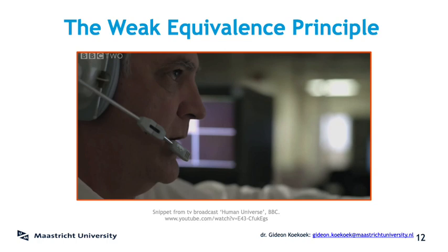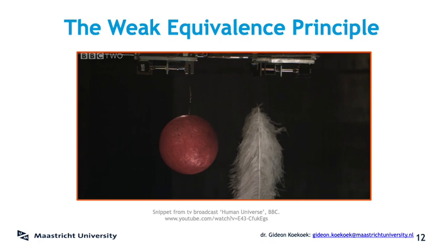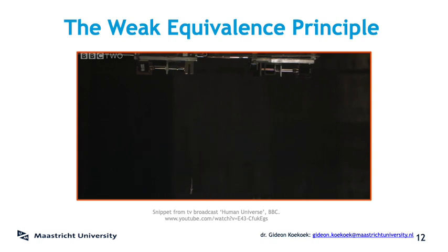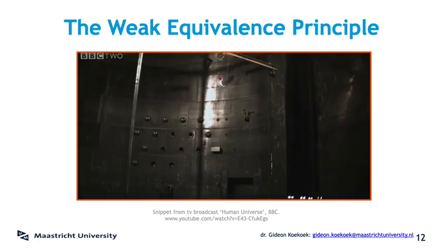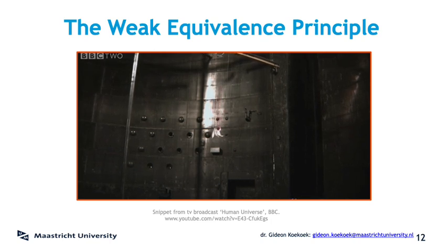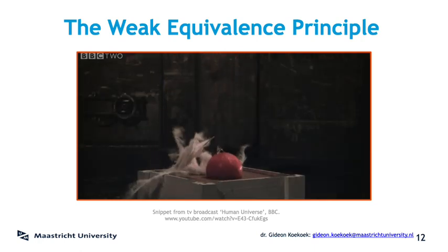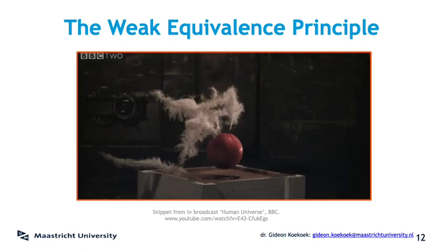Or you can just remove air pressure altogether, as they do in this demonstration in this video. Here they took a very big vacuum chamber, and they had a bowling ball and a feather drop at exactly the same moment. And as you can see in slow motion, they fall down with exactly the same acceleration and reach the ground at exactly the same moment. So it really is true that gravitational forces make objects, despite their mass or composition, drop with exactly the same acceleration.